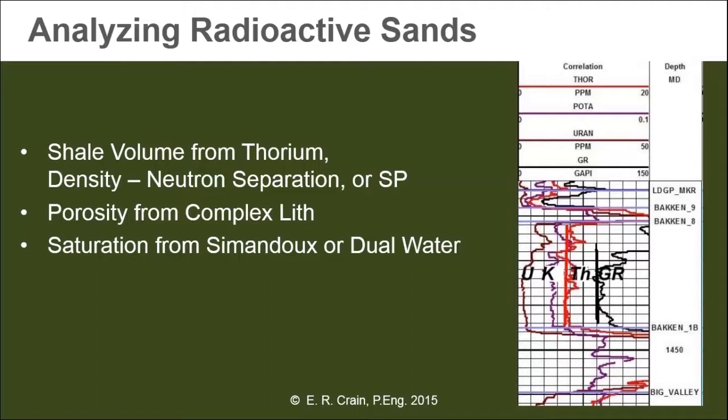Sometimes that's necessary if the sand is radioactive, usually because of feldspar. Feldspar behaves like a sandstone — density-neutron would be very close together in a clean feldspar sand, but if there was clay there would be some separation and we could calculate the shale volume that way. Sometimes the SP works in some radioactive sands; the resistivity in the surrounding beds is low enough that the SP still behaves like a normal SP, and we can calculate shale volume from that.